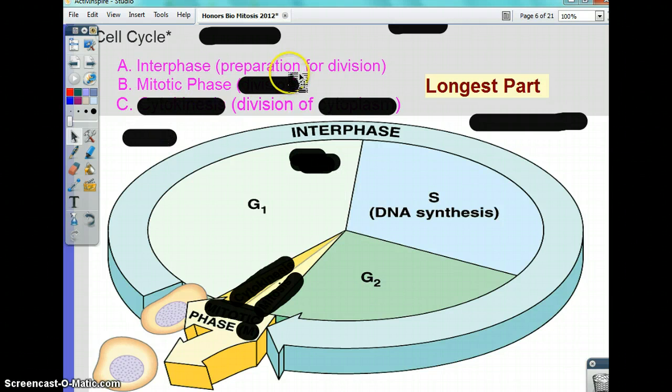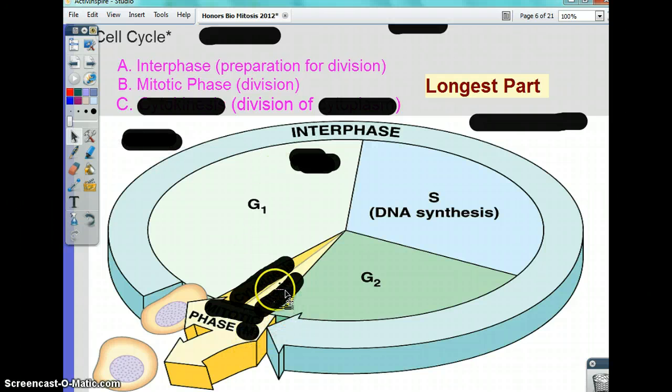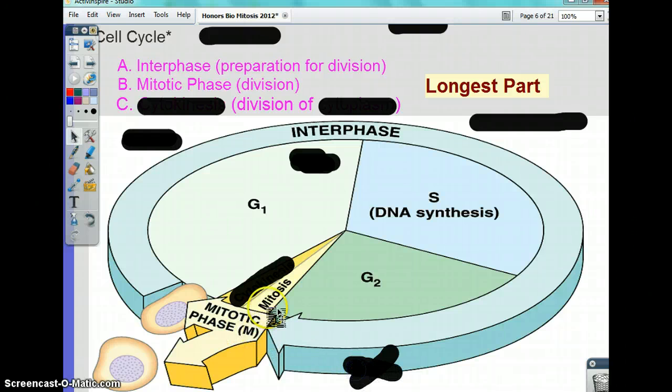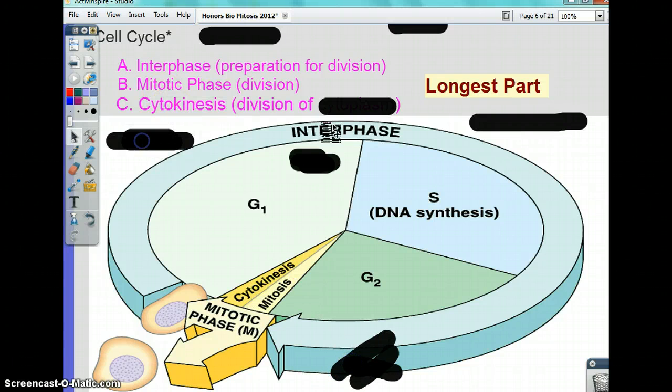The second part of the cycle is mitosis phase, which is division of the cell. It can also be called mitotic phase or the M phase, and I'll cover that in my next video. And the last part of the cell cycle is cytokinesis, which is when the cytoplasm splits.